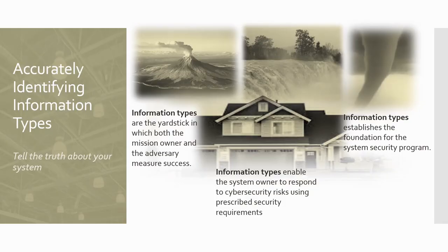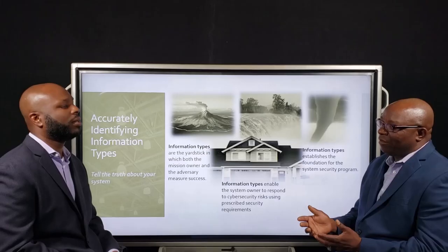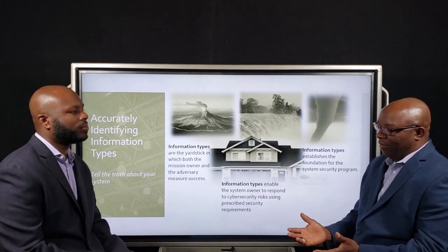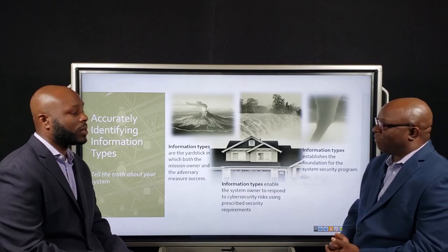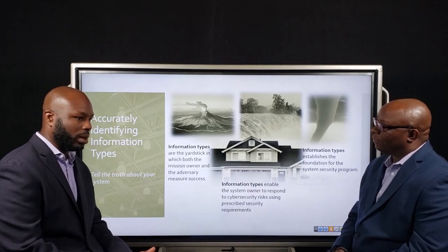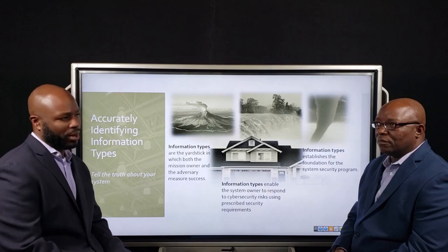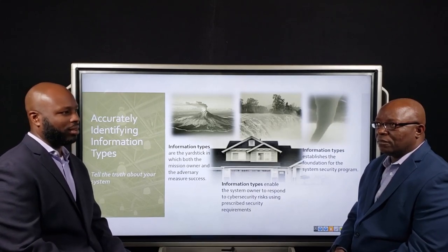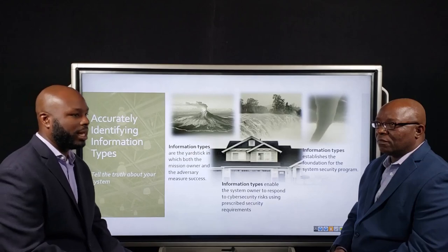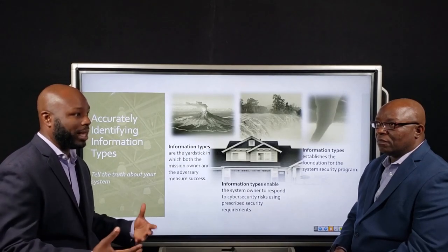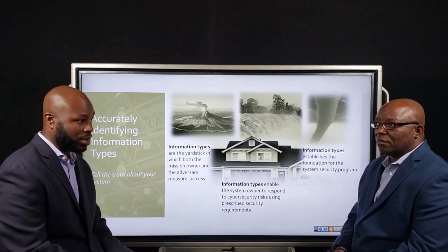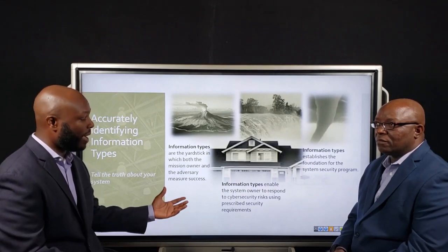On the previous slide, we talked about establishing a security program. But in all actuality, a security program is only going to be effective if the information types are actually identified. Would you agree? Yeah, I 100% would agree. If you're looking at your security program, you really want to understand the type of personnel you need, what type of training requirements they may have, what type of processes they're going to implement, and what technology and tools they're going to use. Without understanding the security requirements that bound that, you're dead in the water. And the defined way to understand what those security requirements are is to identify, first, your information types.